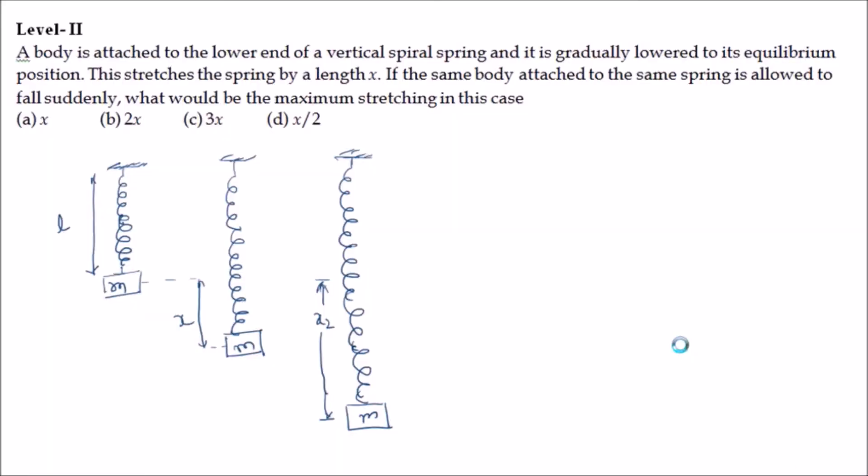A body is attached to the lower end of a vertical spiral spring and is gradually lowered to its equilibrium position. This stretches the spring by a length x. If the same body attached to the same spring is allowed to fall suddenly, what would be the maximum stretching in this case? This is a very good problem.